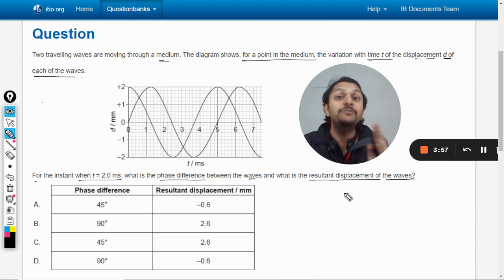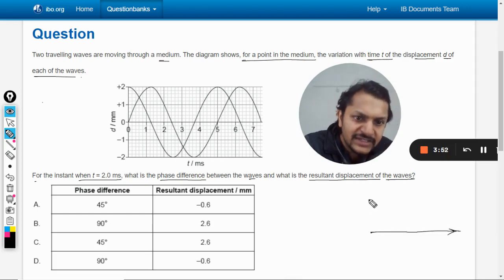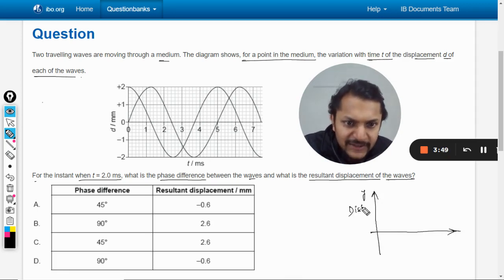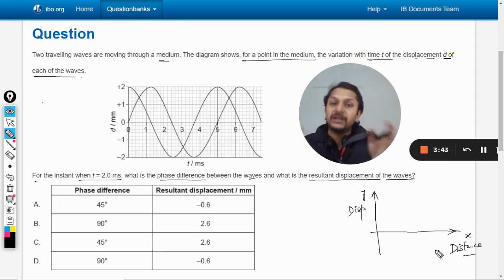Let us say there is one string. Obviously the string is made up of many particles. We are not considering that. If the graph given is like this, on the y-axis you have displacement and on the x-axis you have distance.